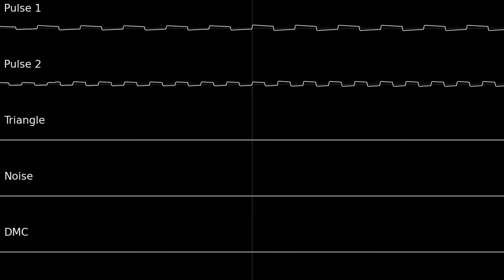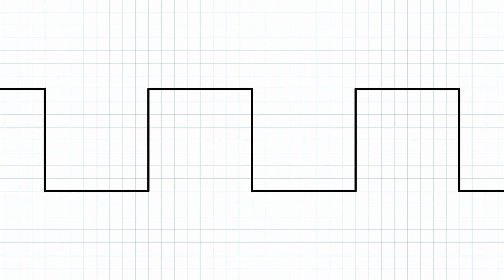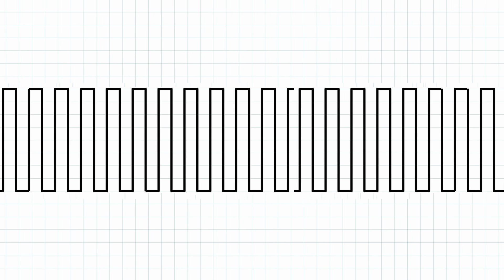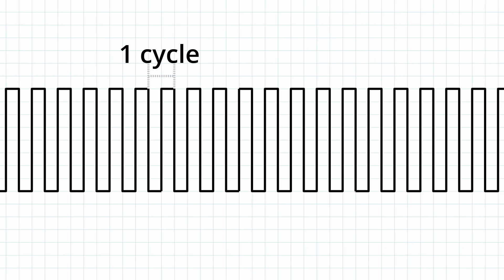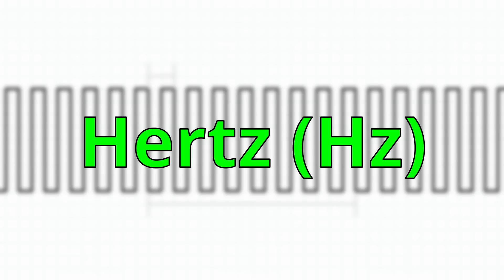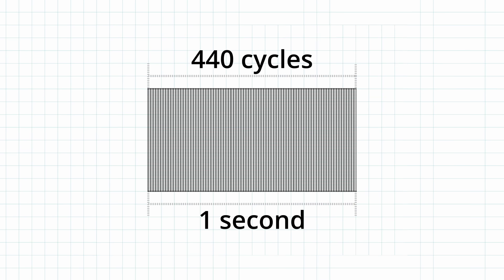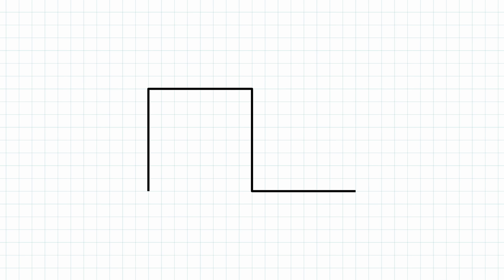We're going to focus on the pulse wave channels here. A pulse wave is a wave formed by the alternation between high and low logic states. Imagine that the high state is 1 and the low state is 0 — a pulse wave cycle would look like this. The pitch of any sound is determined by the frequency of its sound wave. The frequency is measured by the number of cycles per second, and the unit of this measure is called hertz. So 1 hertz equals 1 cycle per second. The A note right above middle C on a piano is usually tuned to 440 hertz, so if you want to play a pulse wave note of the same pitch, you have to oscillate it at 440 cycles per second. Until now, we've been talking about a pulse wave that has a cycle with half a high state and half a low state — a perfect square wave.